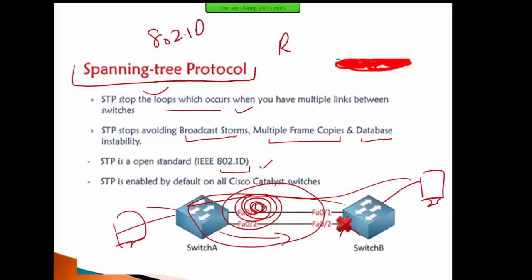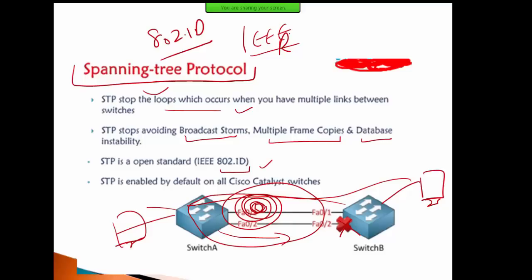802.1D is the standard defined by IEEE — the Institute of Electrical and Electronics Engineers. It is an organization that defines new protocols and research, and then assigns codes. 802.1D is the STP standard, just like Ethernet has the code 802.3, which applies to cables.